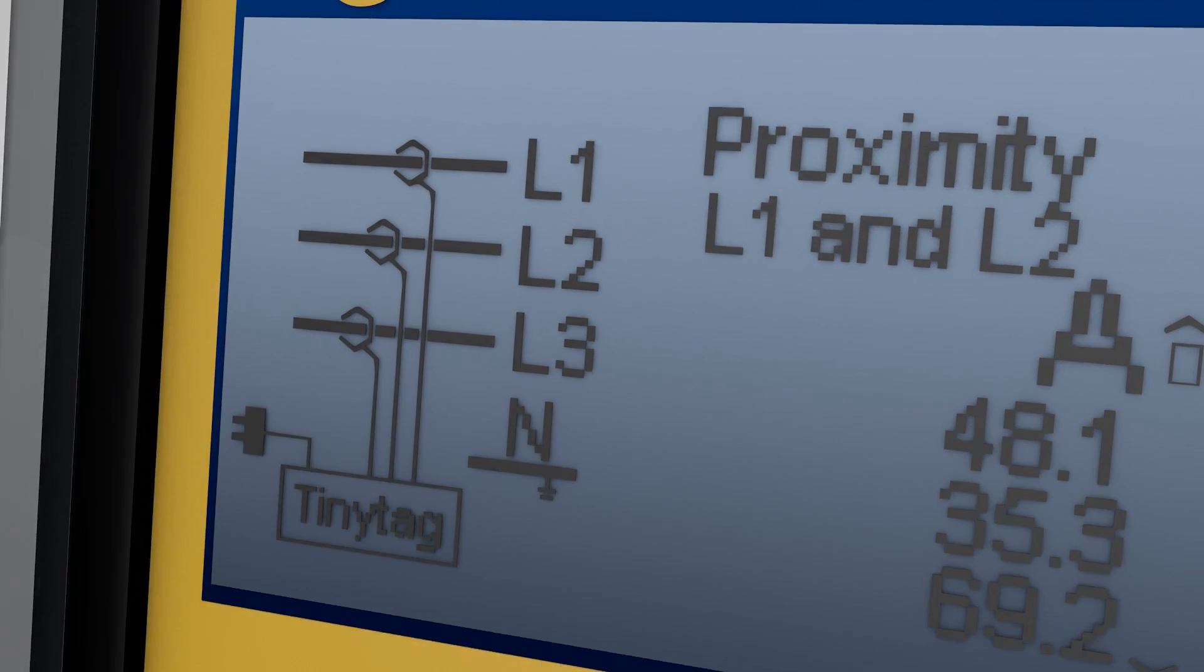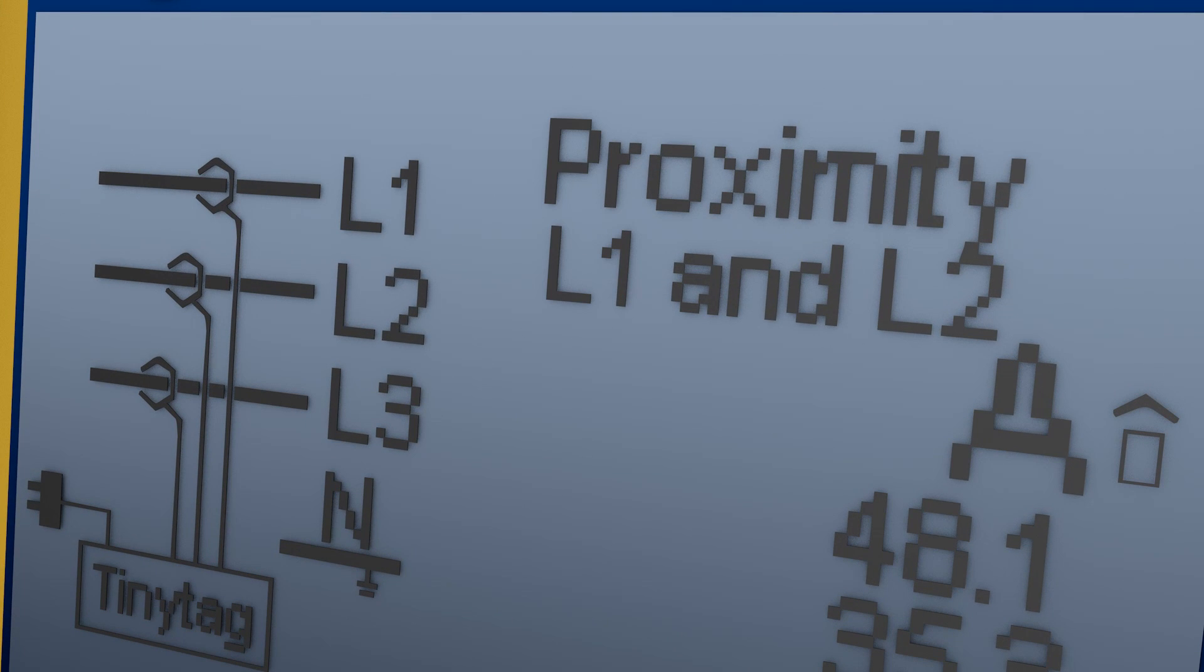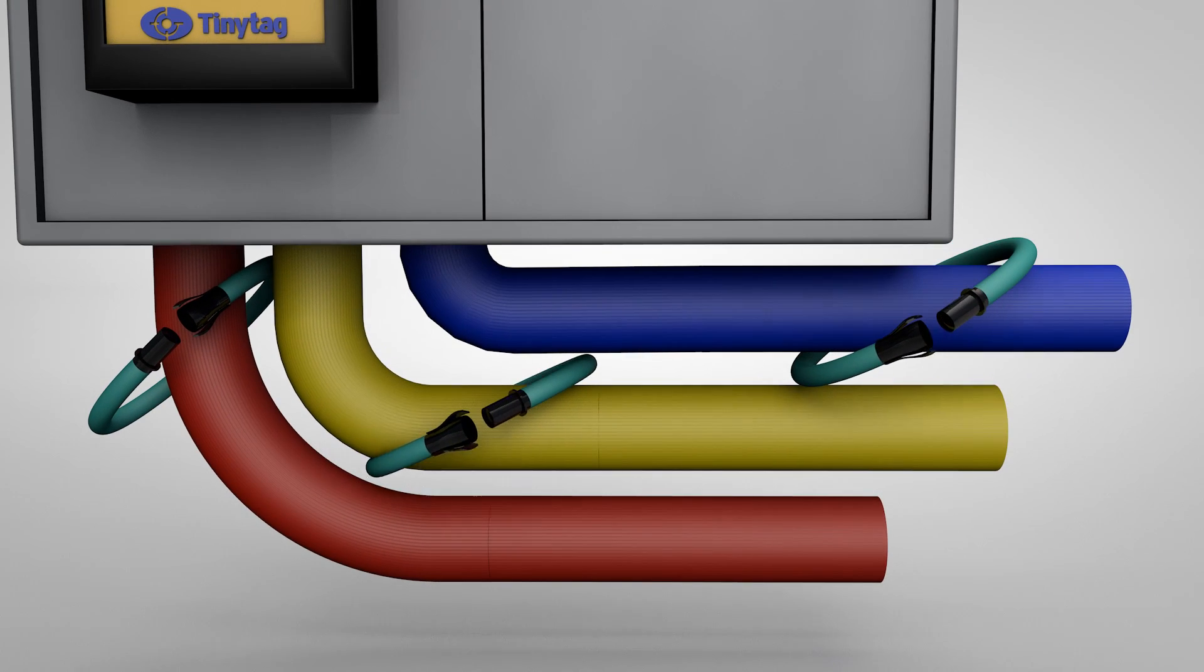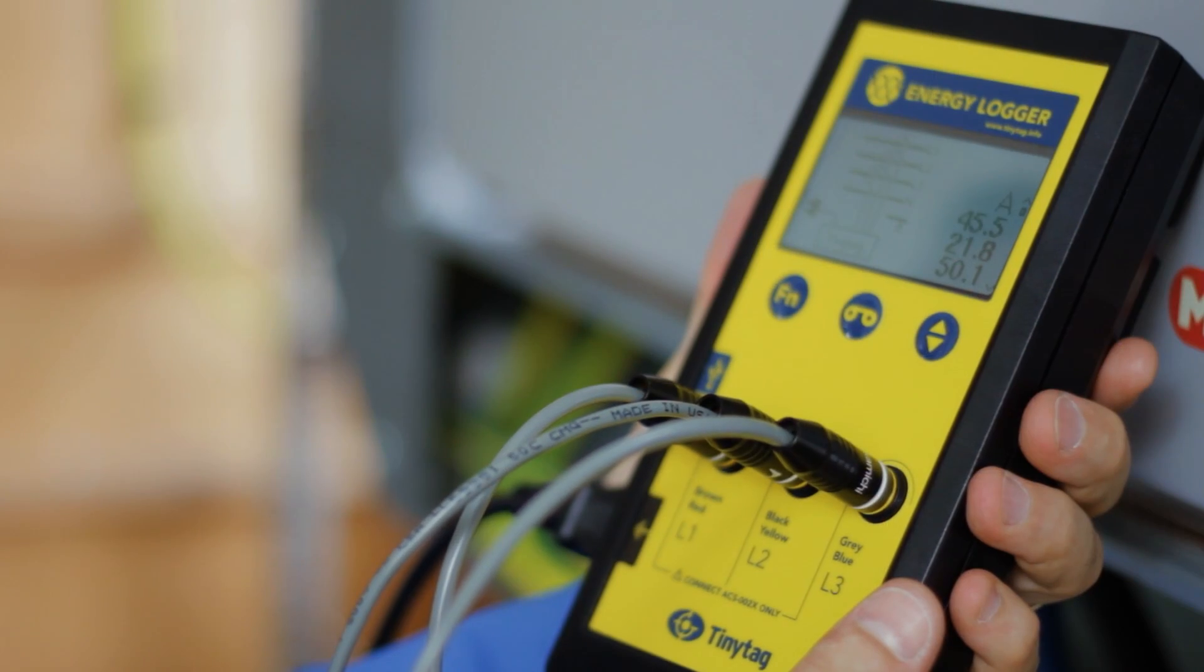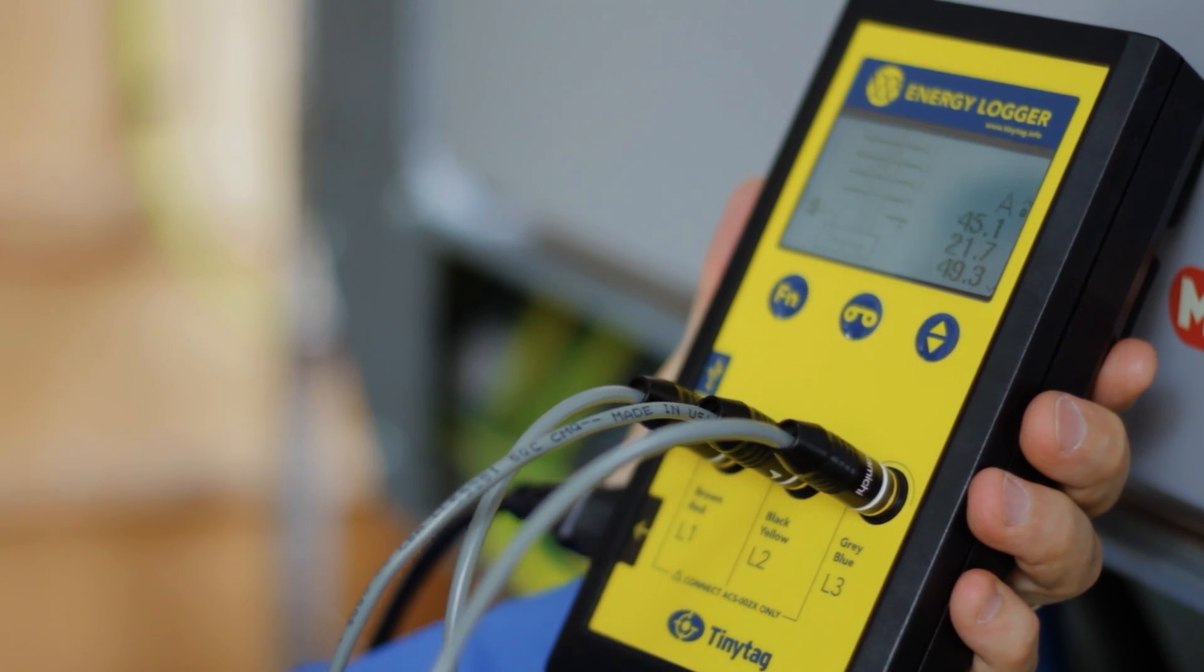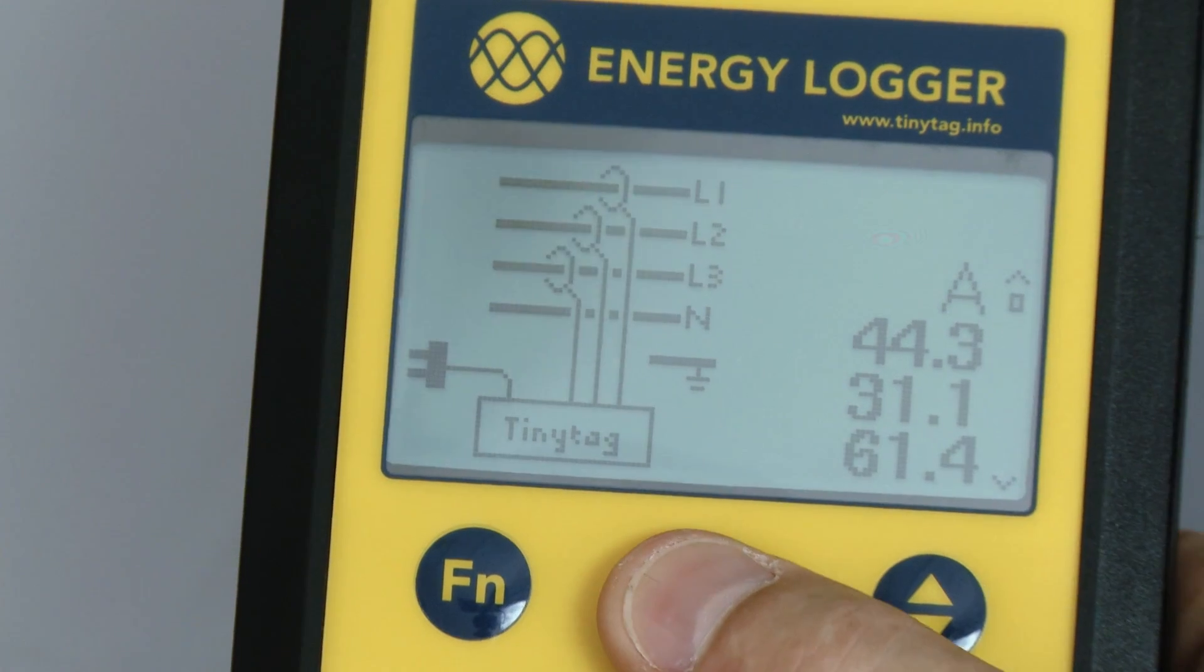Automatic phase detection starts, with on-screen prompts indicating whether the coils need to be adjusted if they have initially been placed too close together. Once the coils are correctly positioned and the messages disappear, press the record button to start the logging run.